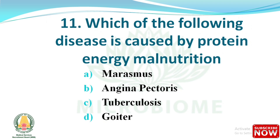Question: Which of the following diseases is caused by protein energy malnutrition? Options: marasmus, angina pectoris, tuberculosis, and goiter. The right answer is option A - marasmus.